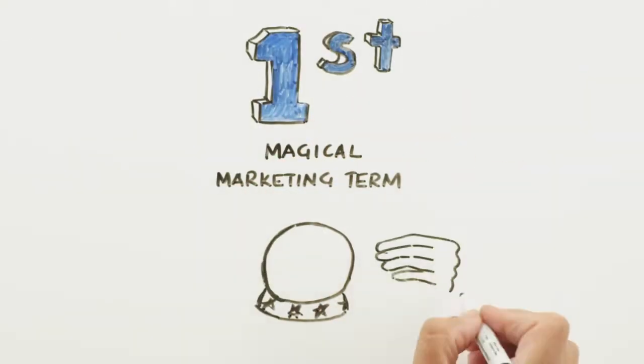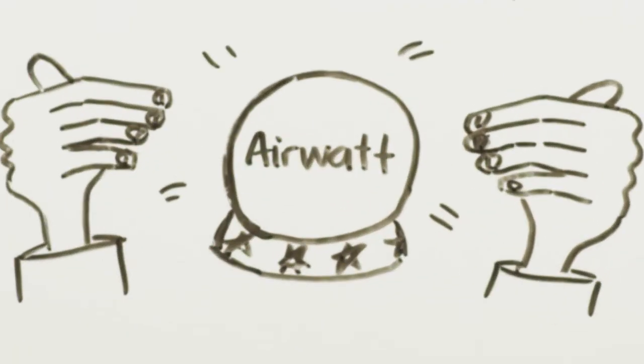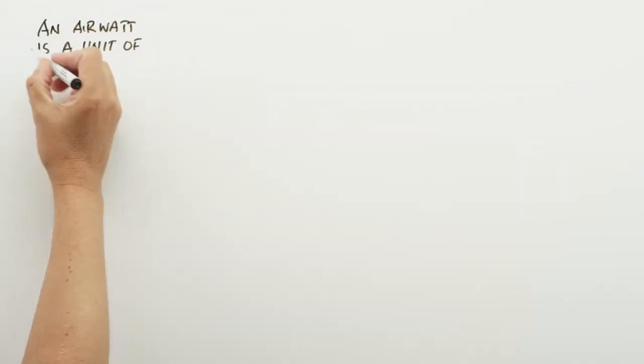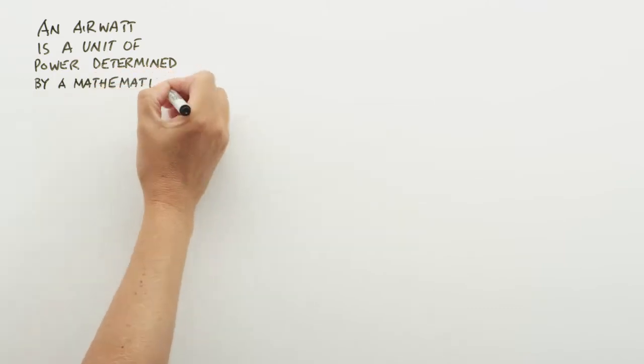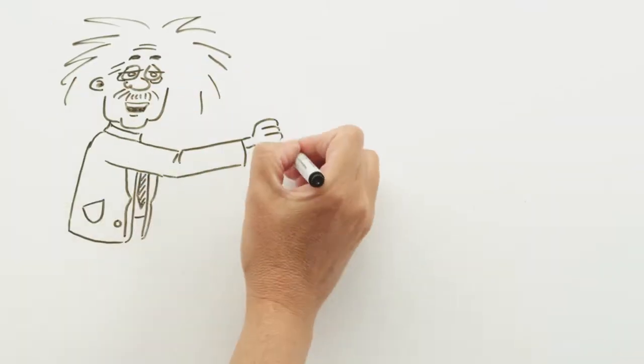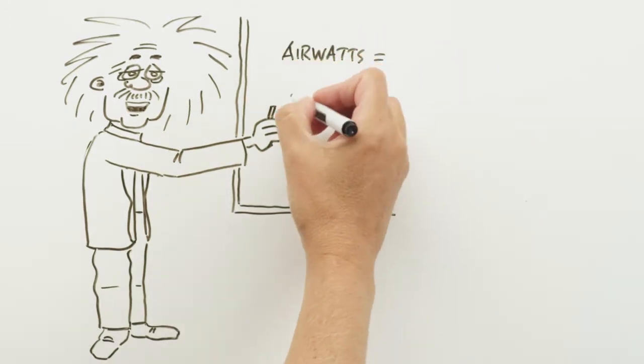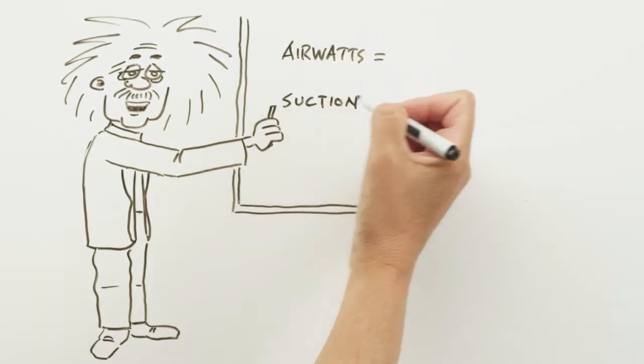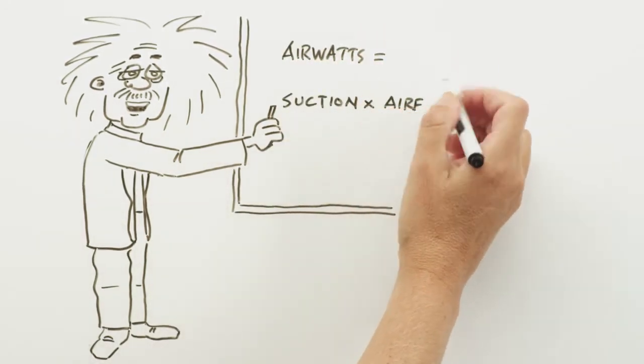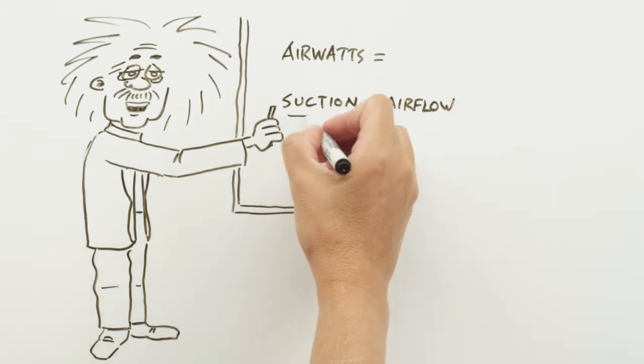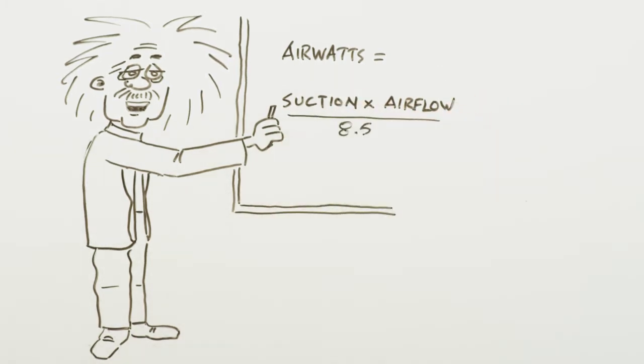The first magic word is airwatt. An airwatt is a unit of power determined by a mathematical equation. Here it is. An airwatt equals suction, measured in inches of water lift, times air flow, measured in cubic feet per minute, divided by 8.5.